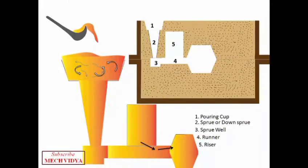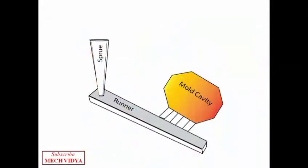Now there is one more component left: the in gates. The molten metal flows from the runner to the mold cavity through these in gates. These in gates are connecting channels between the runner and the mold cavity.